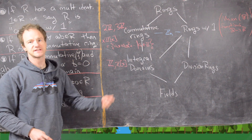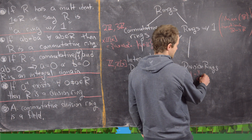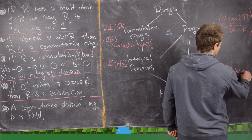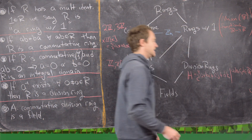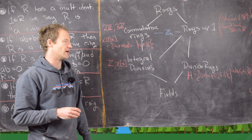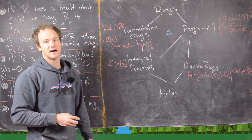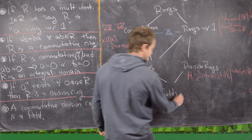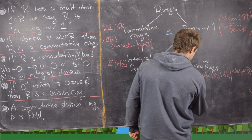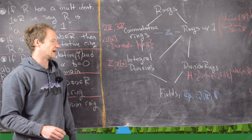For division rings, the quaternions form one — we'll prove this more carefully. This is everything of the form a + bi + cj + dk where a, b, c, d are real numbers, and i, j, k satisfy the multiplication rules of the quaternion group. That multiplication is non-commutative, but every element has an inverse. For fields: ℤ_p where p is prime, also ℚ, ℝ, and the complex numbers ℂ — and you can construct many other examples of fields.